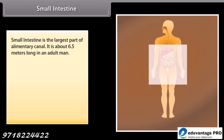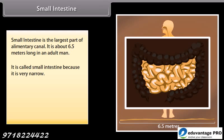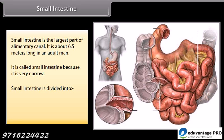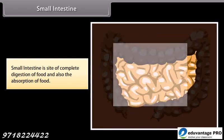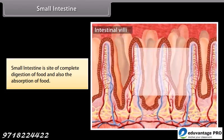The small intestine is the largest part of the alimentary canal, about 6.5 meters long in an adult. It is called the small intestine because it is very narrow. It is divided into duodenum, jejunum, and ileum. The small intestine is the site of complete digestion of food and also the absorption of food.